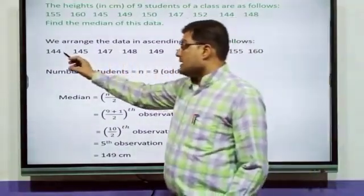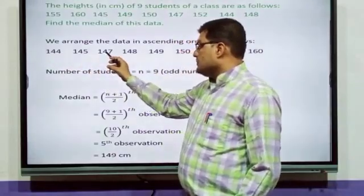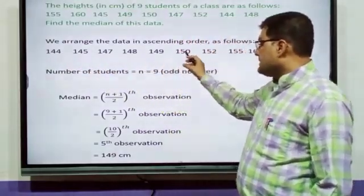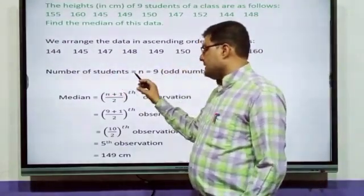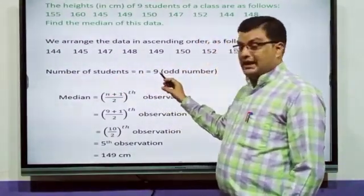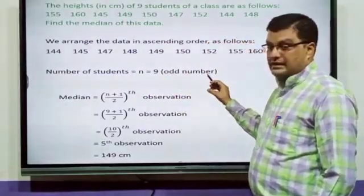Now, we have to count how many data are here. 1, 2, 3, 4, 5, 6, 7, 8, 9. So, we have to write number of students = n = 9. 9 is odd number. You have to write in the bracket odd number.